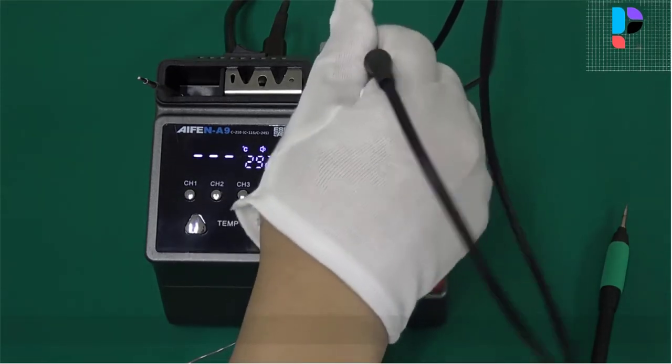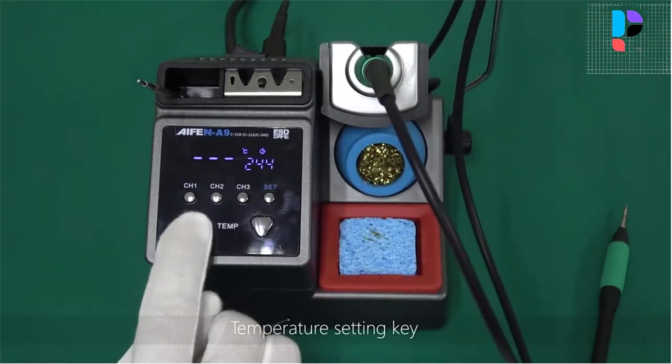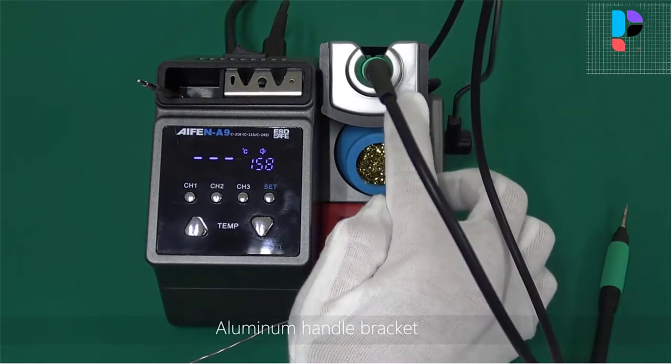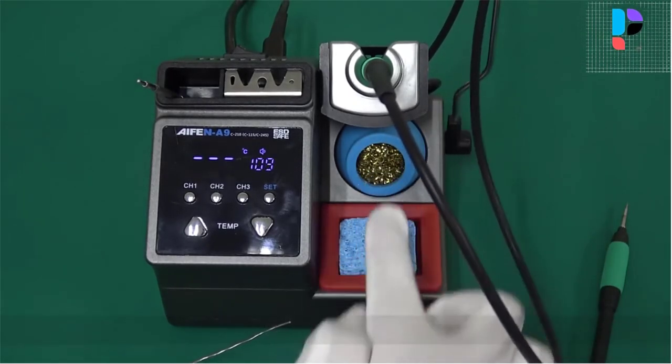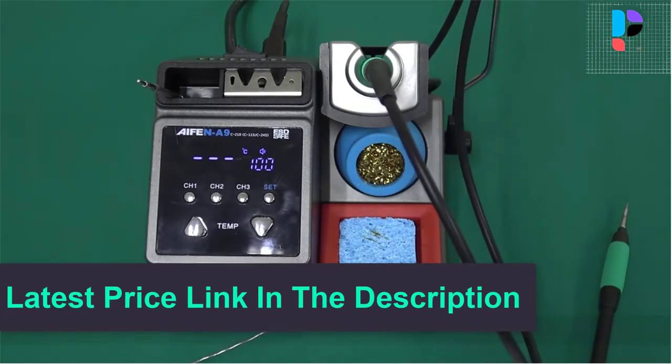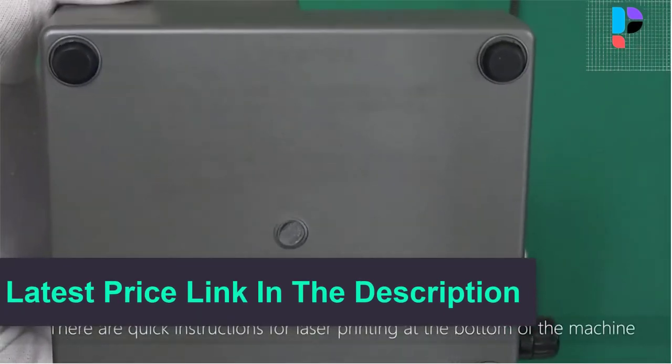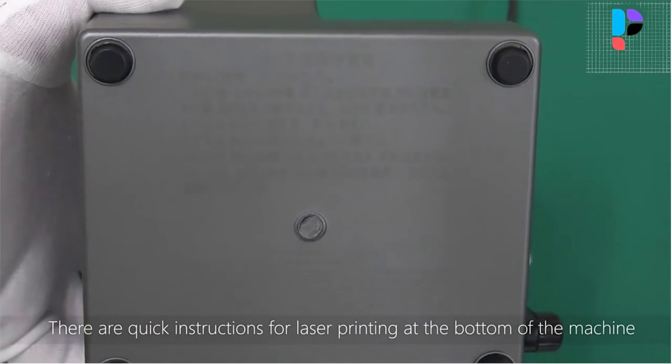Key lock, Celsius and Fahrenheit conversion, buzzer and other functions. Controlled by the software program, the soldering iron tip is inserted into the bracket and it is on stand-by for an instant, and the temperature rises quickly when it is pulled out.